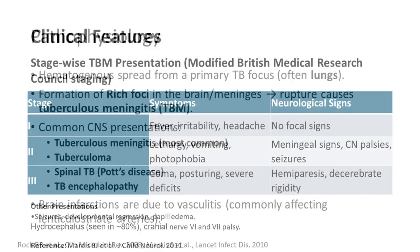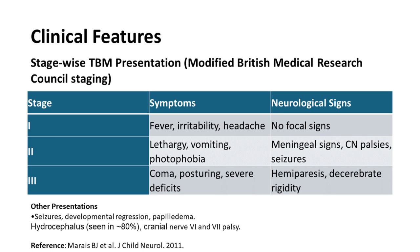The modified British Medical Research Council staging for TBM is still what we use. Try to catch patients in Stage 1, as prognosis is much better. In Stage 1 they usually have only fever and headache with no neurological deficits — so whenever a child presents with fever for 15 days and headache, think of TBM, especially in an endemic country. Stage 2 involves meningeal signs, cranial nerve palsy, and seizures. Stage 3 presents with hemiparesis, focal neurological deficits, decerebrate posturing, and coma.